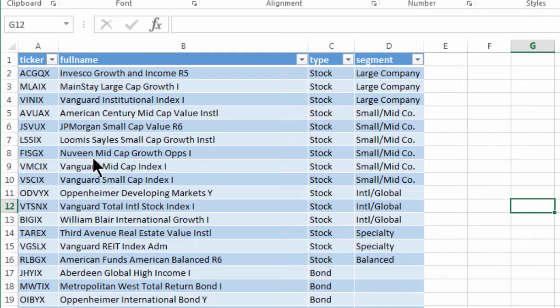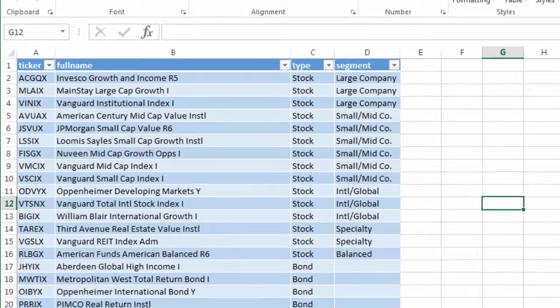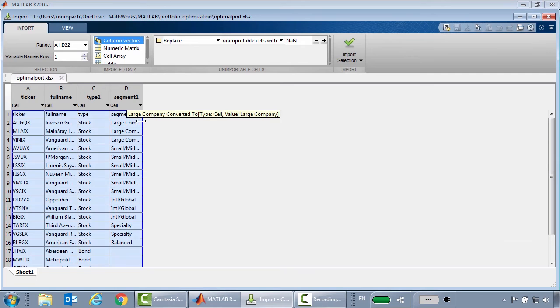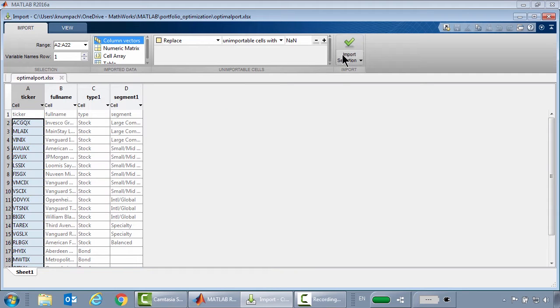In the table there are four columns: ticker, full name of the fund, type, and segment. Let's import the data. MATLAB provides completely interactive tools to make data importing as simple as selecting the data ranges you want.